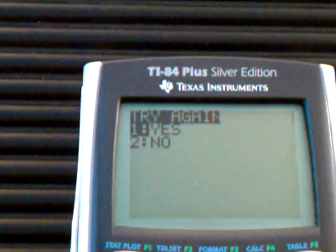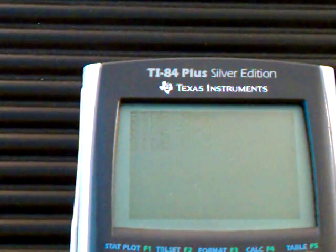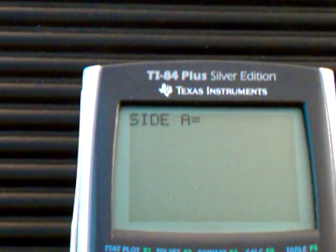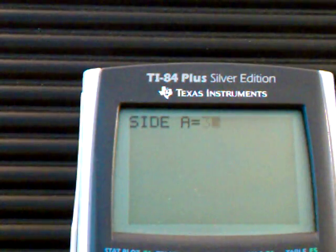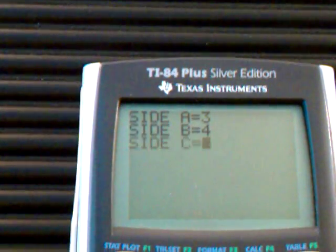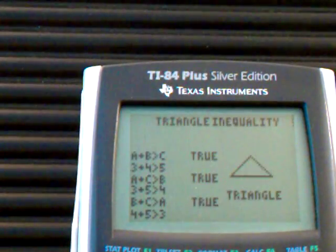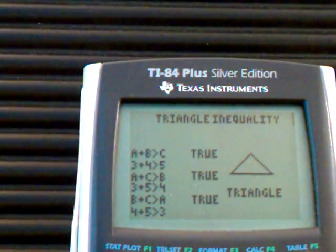So I'm just going to hit enter. If you want to try it again, this time I'm going to say yes. And I'm going to put sides that I know work. I'm going to do three, four, and five. It tells me it's a triangle.